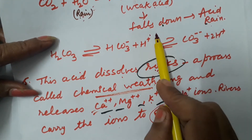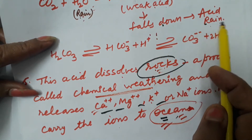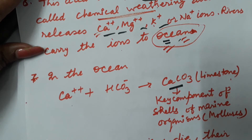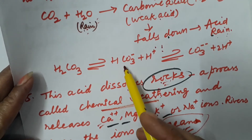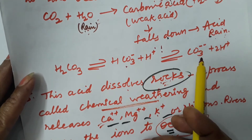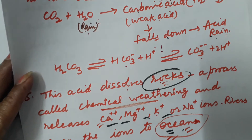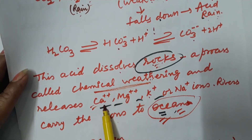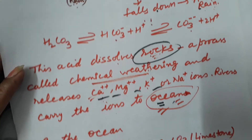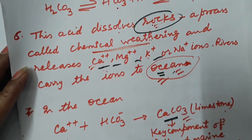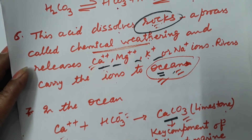Inside the ocean water, dissolved CO2 combines with water to form carbonic acid. Carbonic acid dissociates to form bicarbonate ions, which further break down into carbonate ions. These carbonate ions are present along with the rain water or inside the oceans. Through the process of chemical weathering, calcium ions are released and they also reach the ocean. Inside the ocean there is a rich source of calcium and carbonate ions, which combine together to form calcium carbonate — this is limestone.